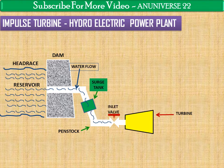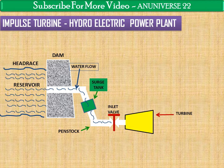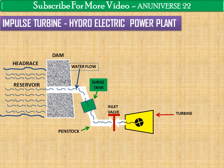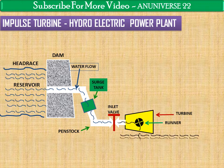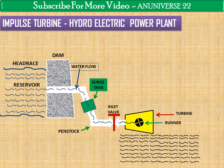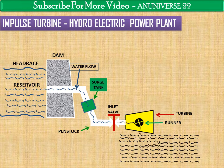Water is flowing. This is the inlet valve, which is basically known as the spear in the case of an impulse turbine, used to control the flow of water. The water strikes the runner — when it strikes the runner, the runner starts to rotate. Water is then discharged to the tailrace. We can see that water strikes the bucket of the runner and is finally discharged to the tailrace after doing its work.